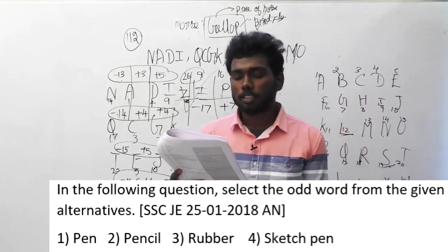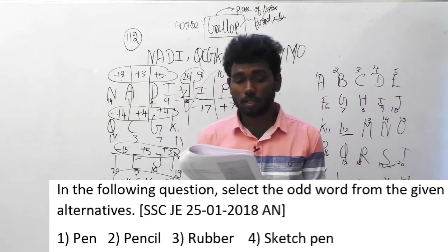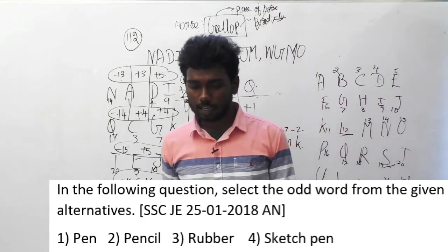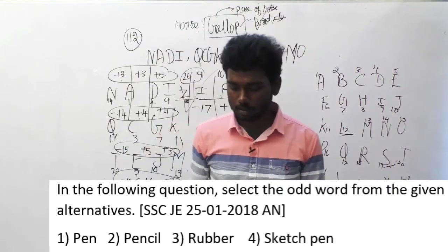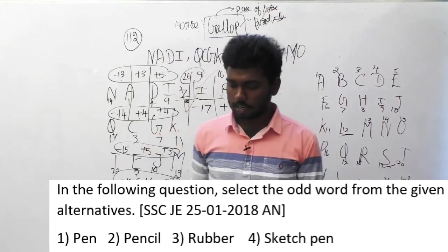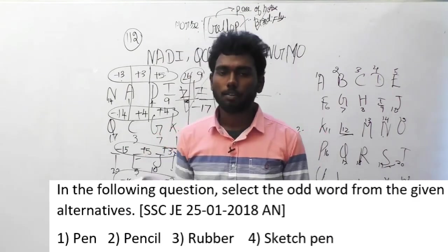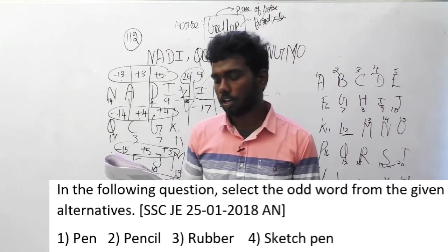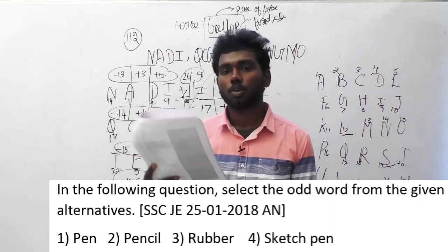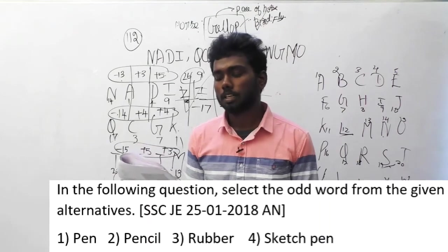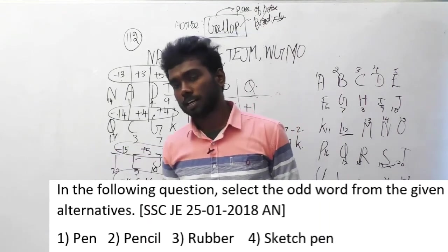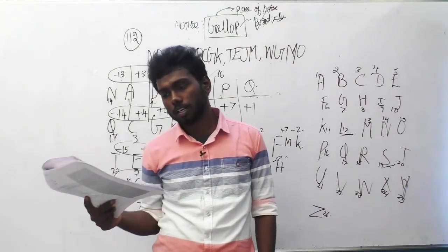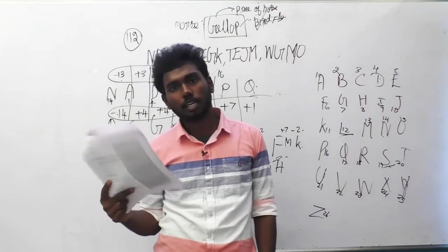Option 1 is pen, option 2 is pencil, option 3 is rubber, and option 4 is sketch pen. These are the options given. You have to find which option is the odd one. If you look at the other options and compare with option C, the other options are useful to write, but eraser alone is useful to rub where you have made a mistake. So option C, rubber, is the answer.